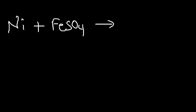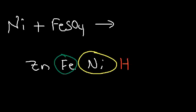Let's try another example: nickel reacts with iron(II) sulfate. Will this reaction work? On the activity series the order is zinc, Fe, nickel, then hydrogen. Nickel is less reactive than Fe, so nickel is not strong enough to displace Fe out of solution. Because nickel is less reactive, this reaction does not work — no reaction.